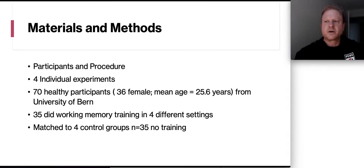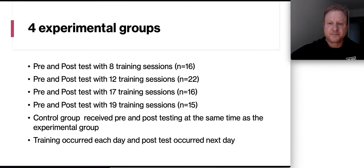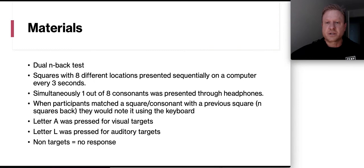Now let's take a look at the materials and methods on how they actually did this. The participants and procedures were four individual experiments. They started out with 70 healthy participants. Thirty-six were female. Average age was 25.6 from the University of Bairn. Thirty-five did the working memory training in four different settings. And then they were matched to four control groups that had 35 people in them that had no training. And then there was a pre- and post-test that was done on everyone, regardless of whether they were in the 8, 12, 17, or 19 training session. You can see the N is how many people were in each of those sessions. The control group did receive the pre- and post-training at the same time as the experimental group. And the training occurred each day and a post-test for the fluid intelligence happened the next day.